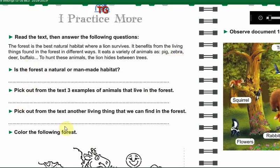Pick out from the text another living thing that we can find in the forest. In the forest we can find two living things which are animals and plants. On Earth we have three living things: animals, plants, and humans. But we can't find humans in the forest because they don't live there. So the other living thing we can find in the forest is plants. Since we named the animals, here we are going to name the plants — for example we can say trees.